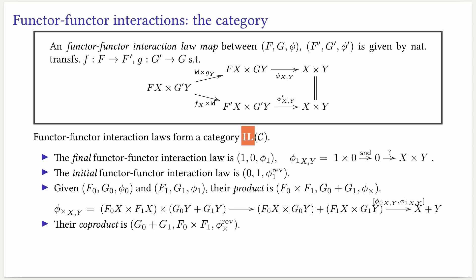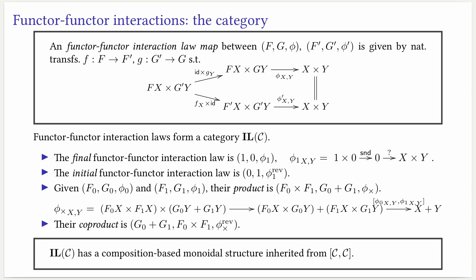This category has a number of properties. For example, there is a final functor-functor interaction law, given by the constant functor 1 and the constant functor 0, with a corresponding phi. The notion of initial functor-functor interaction law is given by swapping around 0 and 1, and reversing the phi as we saw. Additionally, there is a notion of product given by product in the first component and coproduct in the second, while the coproduct is in the reverse way. Finally, an important property is that this category of interaction laws has a composition-based monoidal structure, which comes from the composition structure we already have in endofunctors on C.